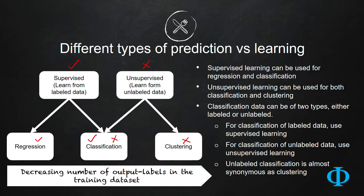Classification data can be of two types: either labeled or unlabeled. For classification of labeled data, you can use supervised learning. For classification of unlabeled data, you can use unsupervised learning. However, unlabeled classification is sometimes almost similar to clustering.